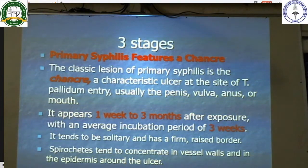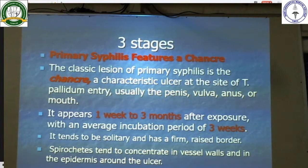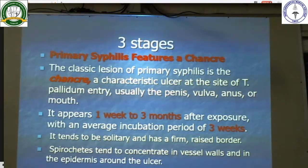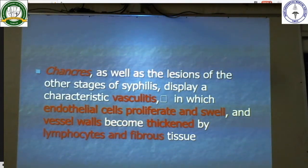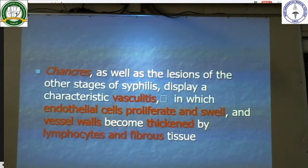Primary syphilis features a chancre — the classic lesion — which is an ulcer at the site of Treponema pallidum entry, usually the penis, vulva, anus, or mouth. It appears 1 week to 3 months after exposure with an average incubation period of 3 weeks. It tends to be solitary and has a firm raised border. Spirochetes tend to concentrate in vessel walls and in the epidermis around the ulcer. Chancres and lesions of other stages of syphilis display characteristic vasculitis in which endothelial cells proliferate and swell, and vessel walls become thickened by lymphocytes and fibrous tissue.